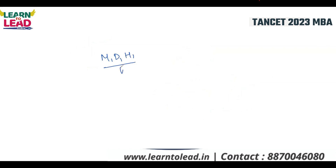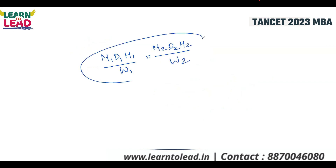The key formula for men and work is: M1 × D1 × H1 divided by W1 equals M2 × D2 × H2 divided by W2, where M stands for men, D for days, H for hours, and W for work. Depending on whether the question involves men and days, men and hours, or days and hours, substitute the relevant variables accordingly.